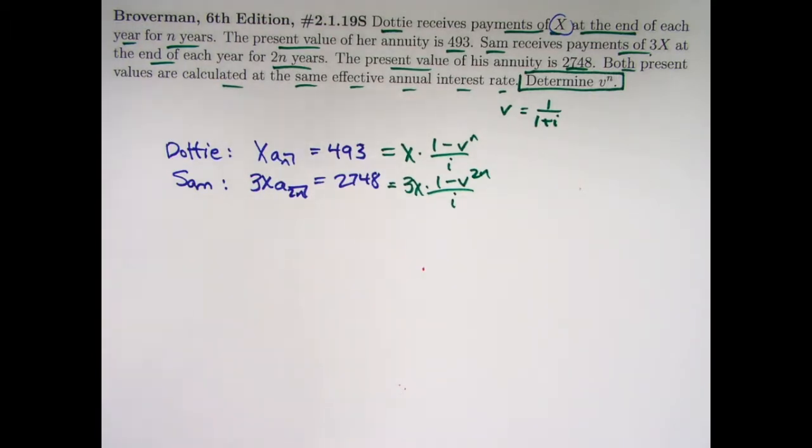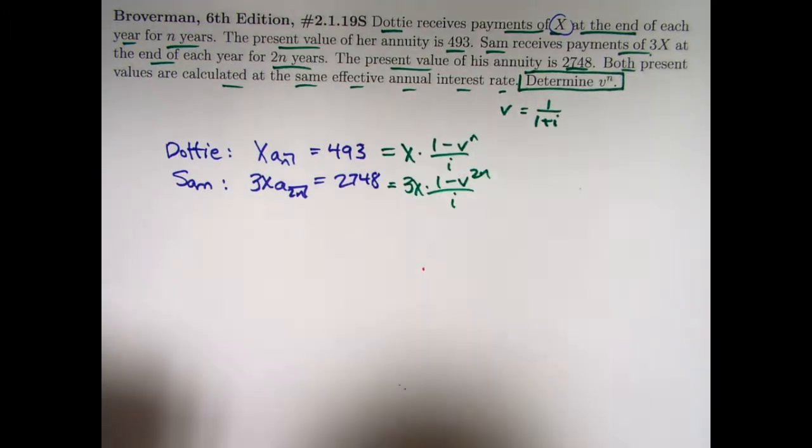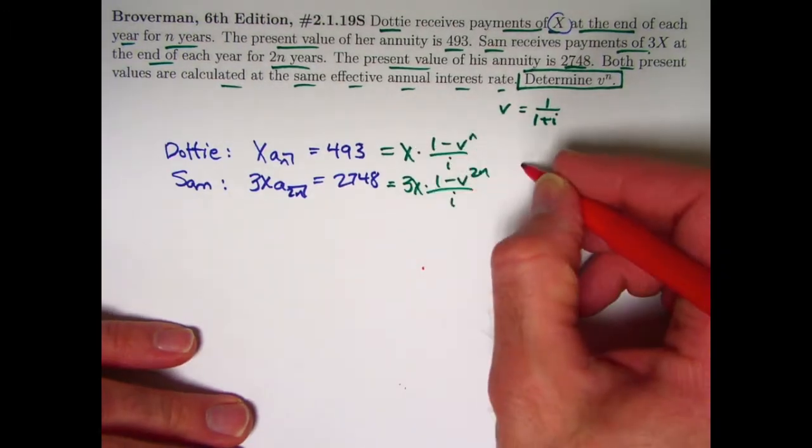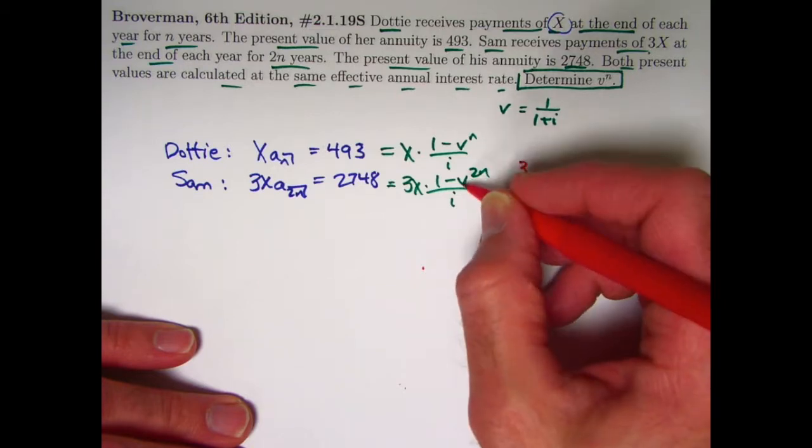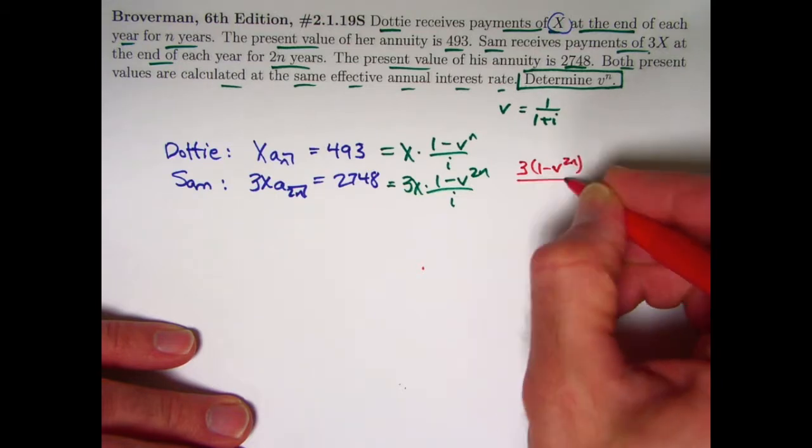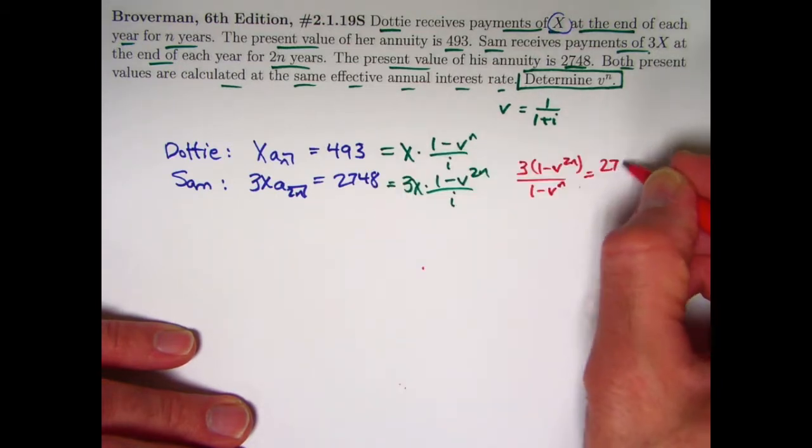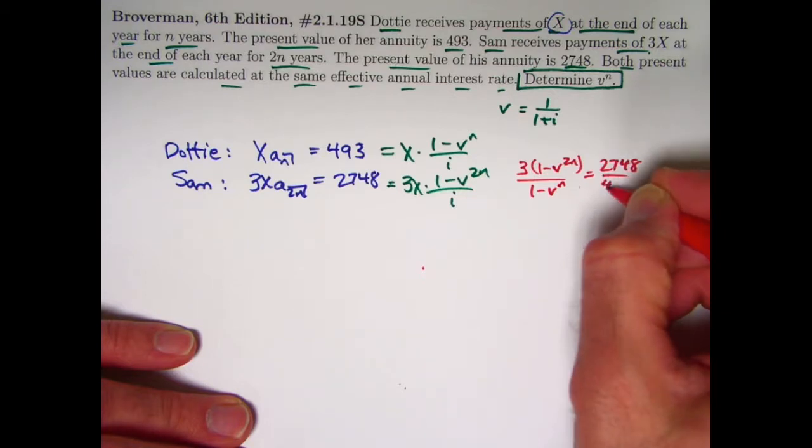Now, you might guess, if you've watched recent videos, we're going to divide one equation by the other. I guess it would make sense to divide the second equation by the first equation. The x's would cancel. We'd get 3 times, the i's will cancel, 1 minus v to the 2n divided by 1 minus v to the n must equal the ratio 2748 divided by 493.